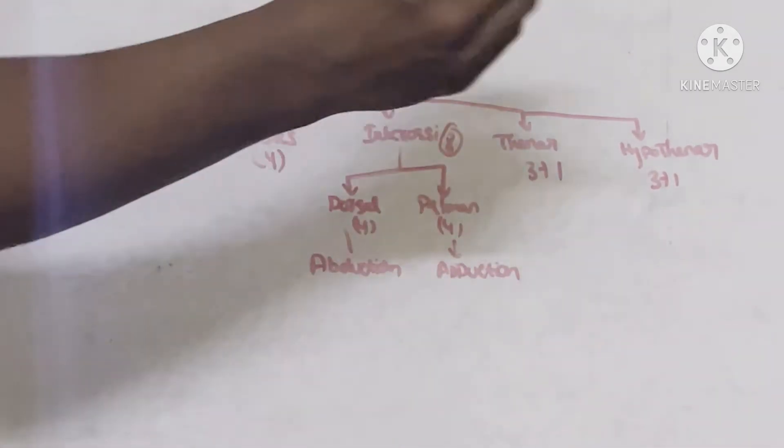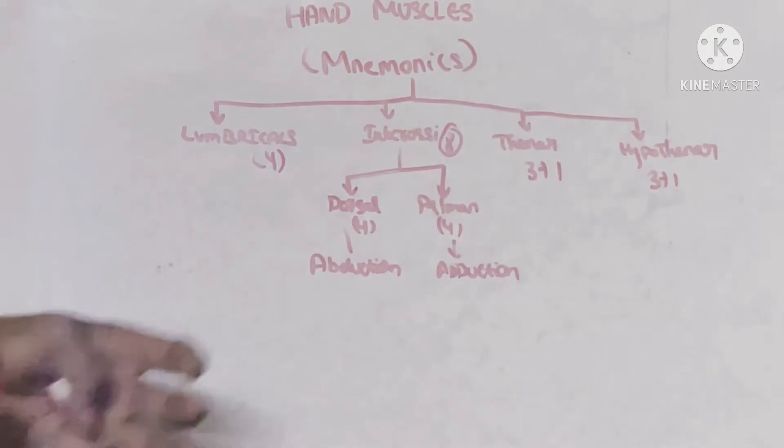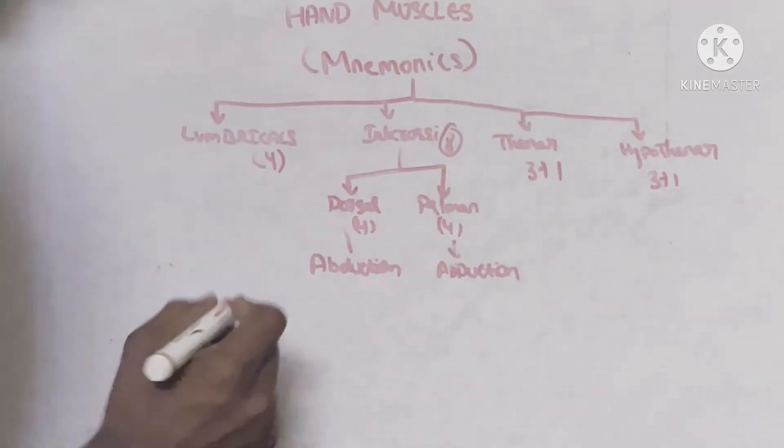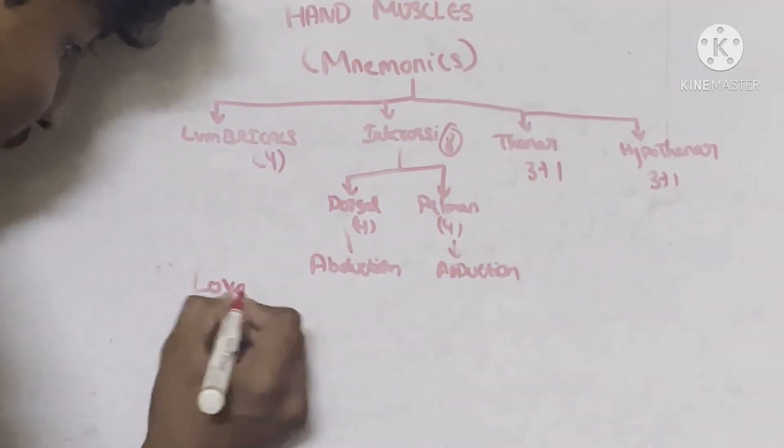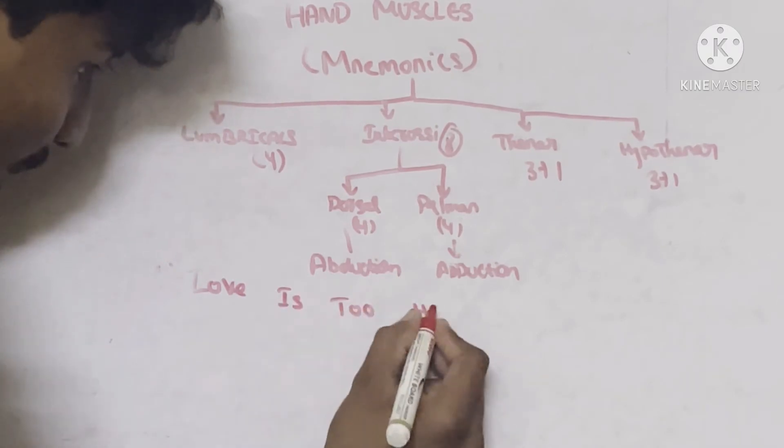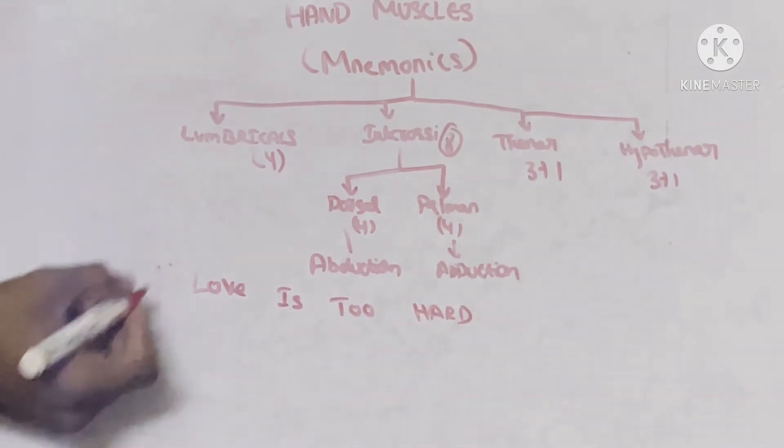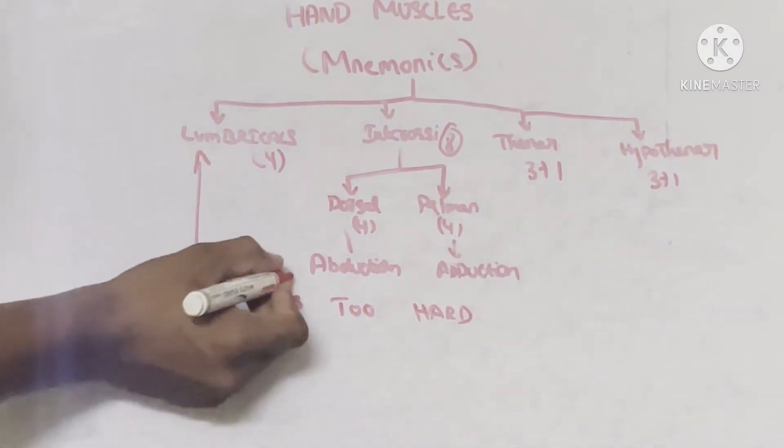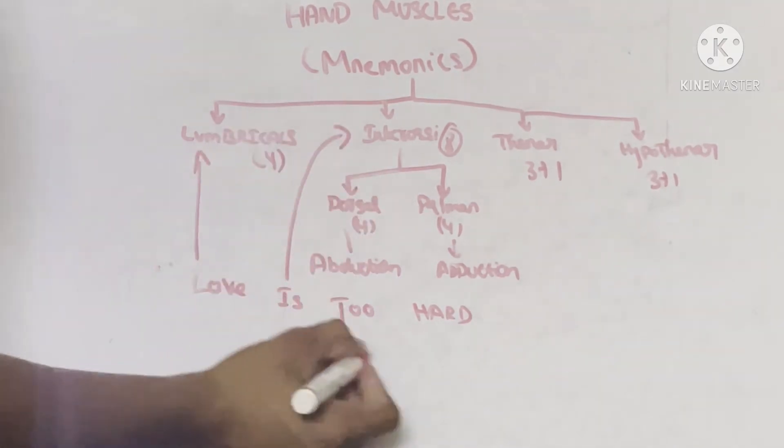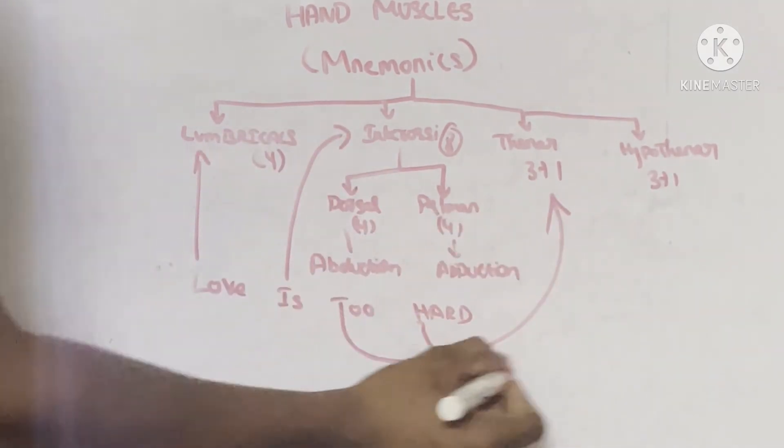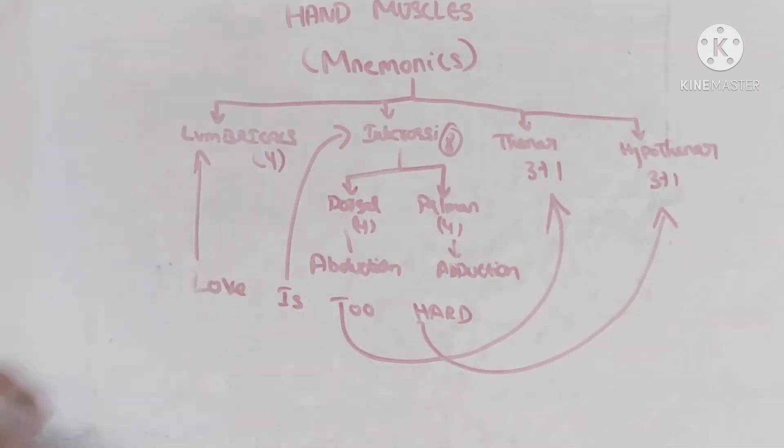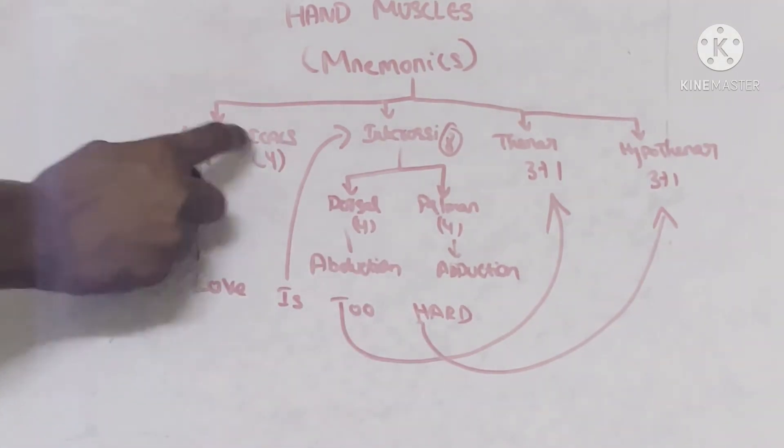In order to remember these four subtopics, I have a simple sentence for you. The sentence is 'Love Is Too Hard.' In this, L stands for lumbricals, I stands for interossei, T stands for thenar, H stands for hypothenar. So this is the simple sentence and mnemonic I found for memorizing this simple topic.